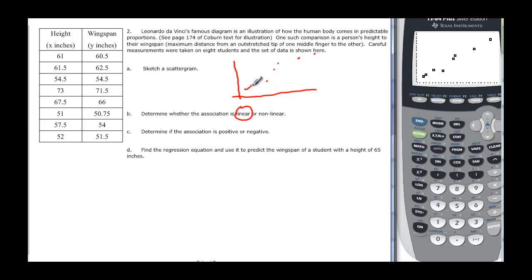I could see that we could get a line maybe coming something like this, somewhere in there that would be a possible line. And is it positive or negative? Again, it's increasing, it's going up from left to right, so it's a positive association. And then we need to find the regression again.